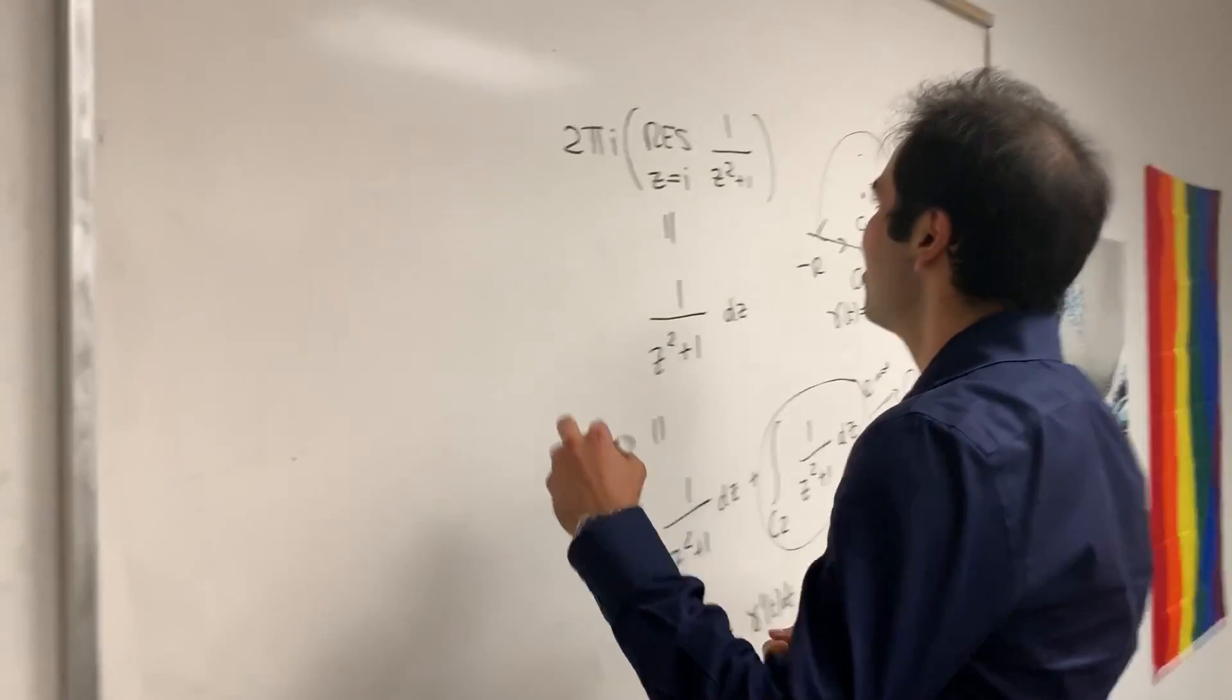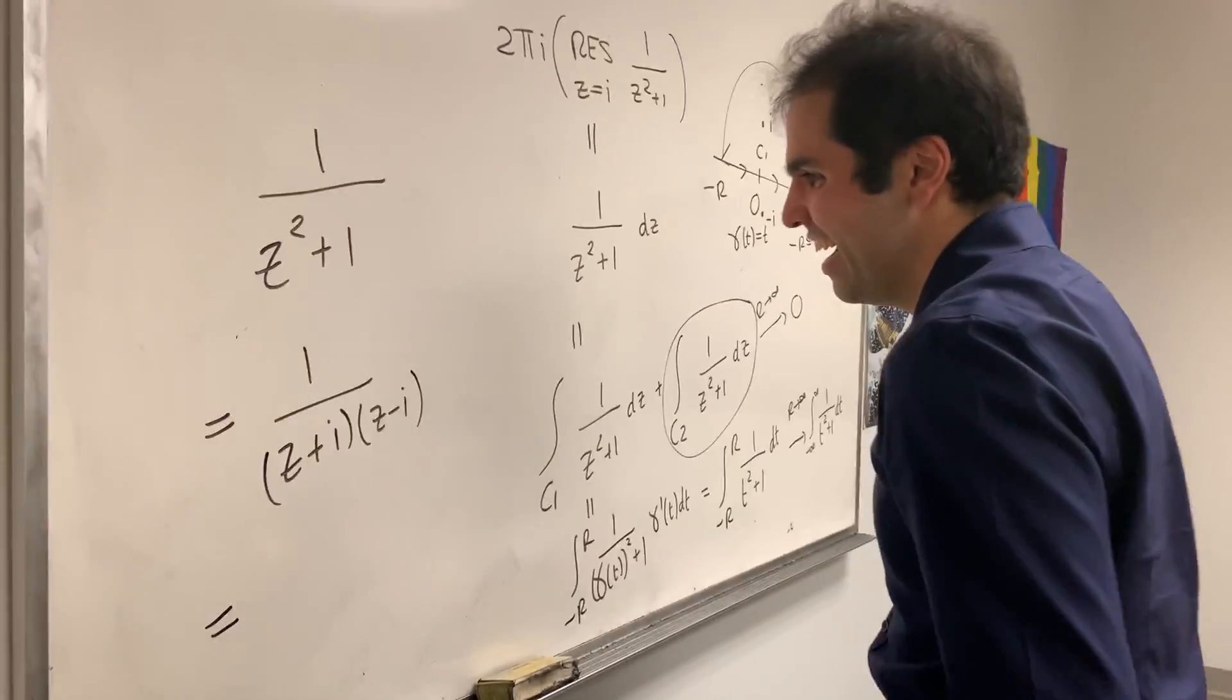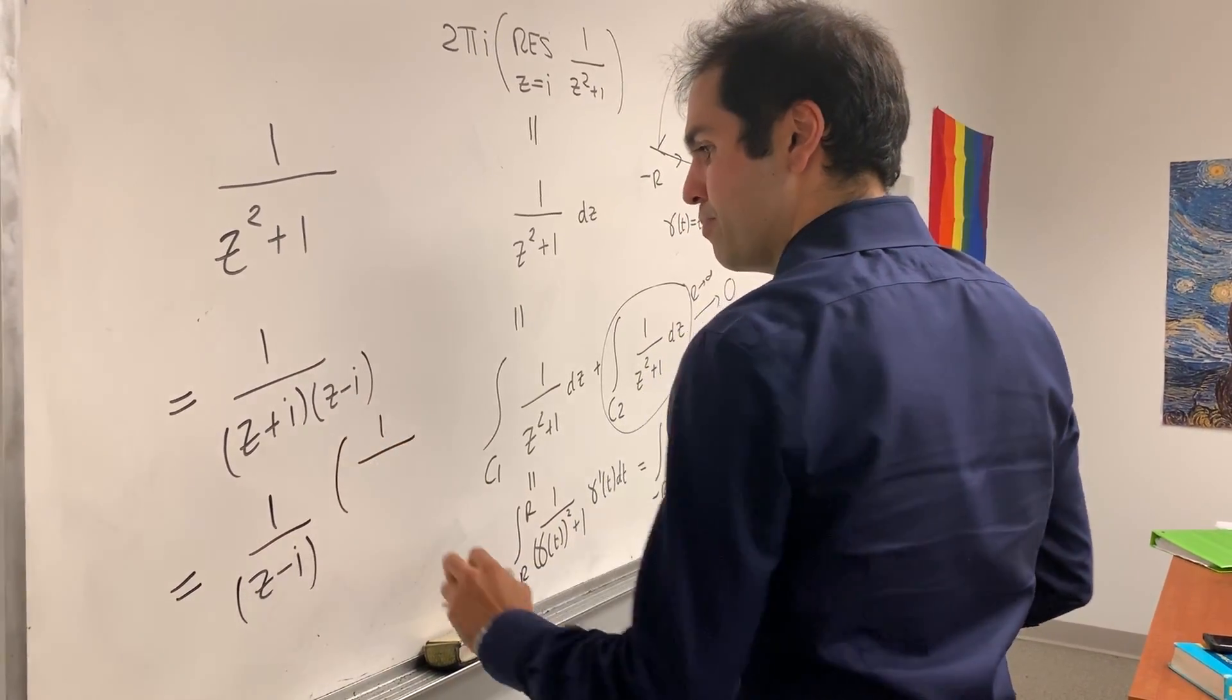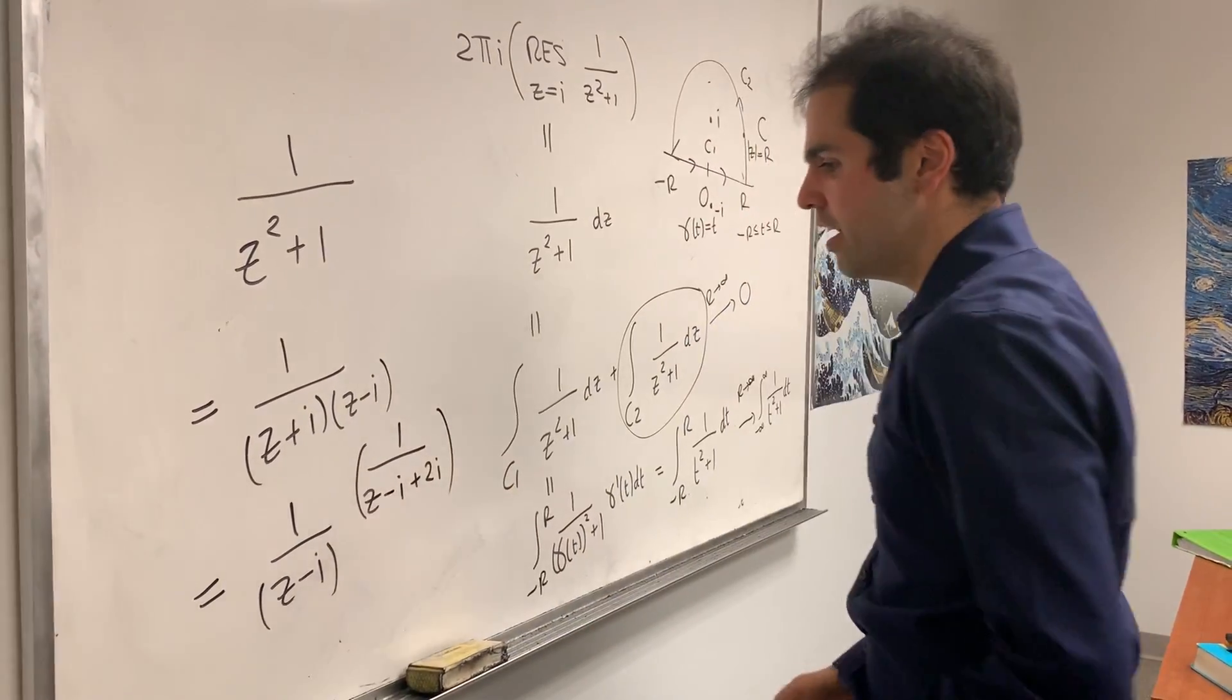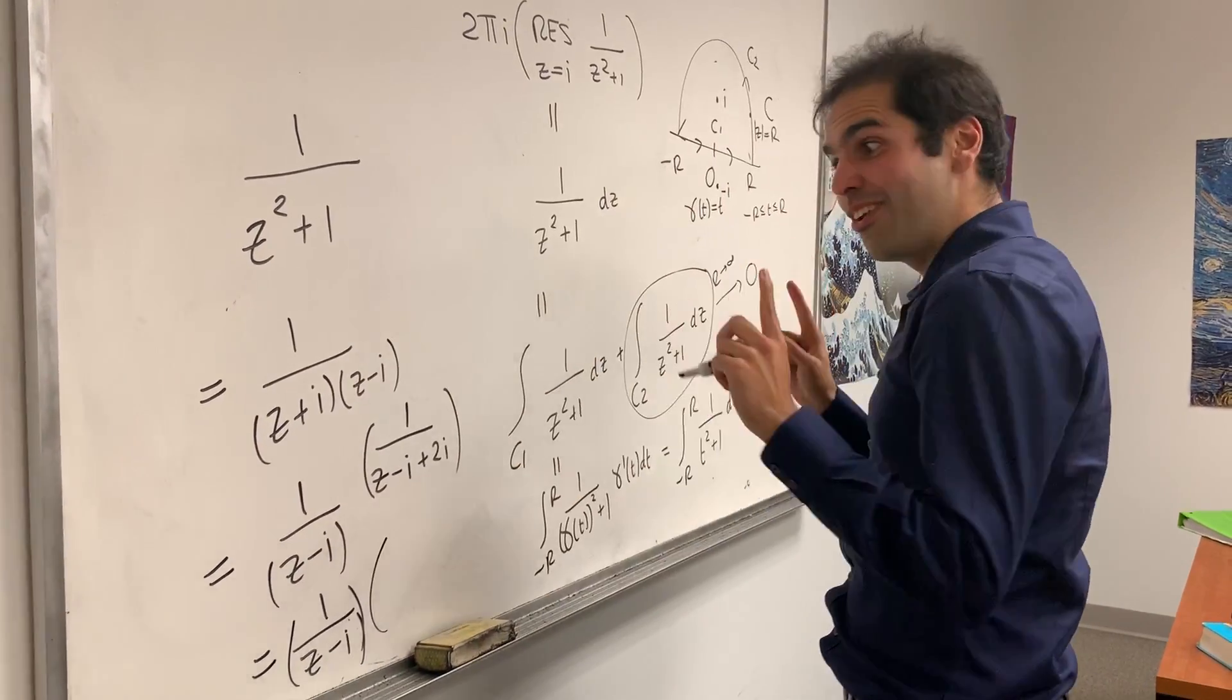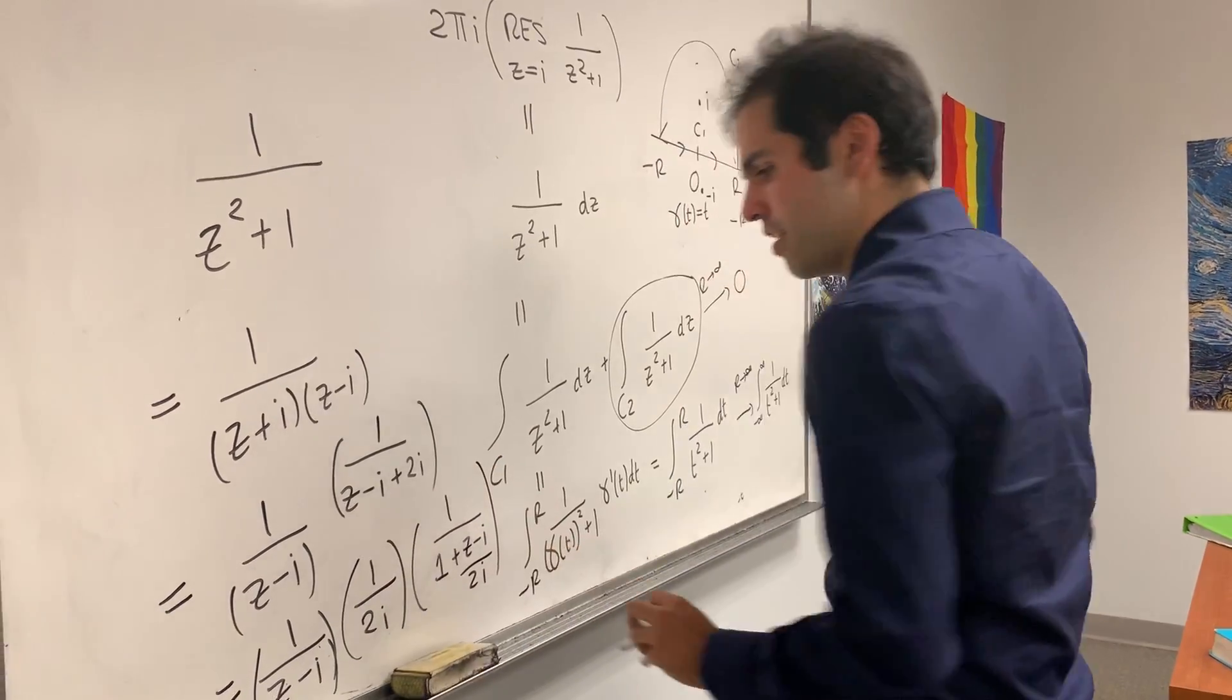So, and it turns out, I believe there is a formula for it. Let's see. I forgot the formula, but prove it on the spot. Yeah, maybe. Let me prove it. So I think it's easiest. So one over z squared plus one. It's one over, I guess, z plus i times z minus i. Sure. That's one over z minus i. And then one over z. I guess. Oh. Maybe I got it. Let's see. Okay. One over z plus i is z minus i plus 2i. And then, this becomes one over z minus i. And let's see. It's been a long time since I've done that. One over 2i. And then, one over one plus z minus i over 2i. I agree. I am following.